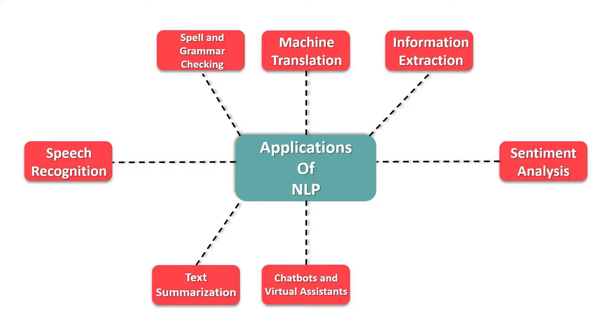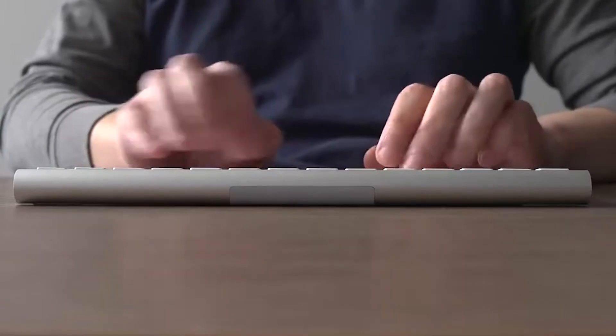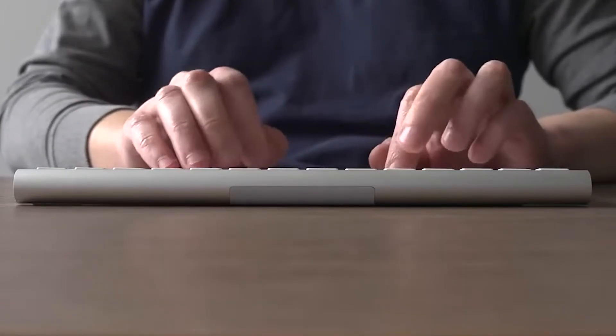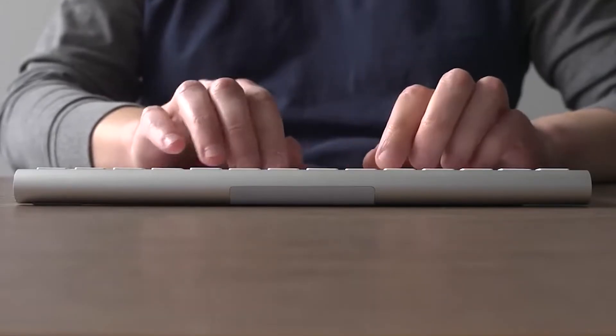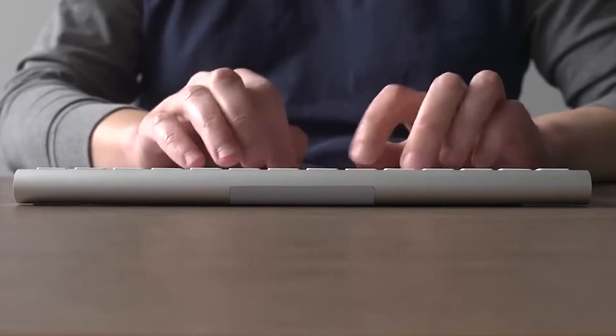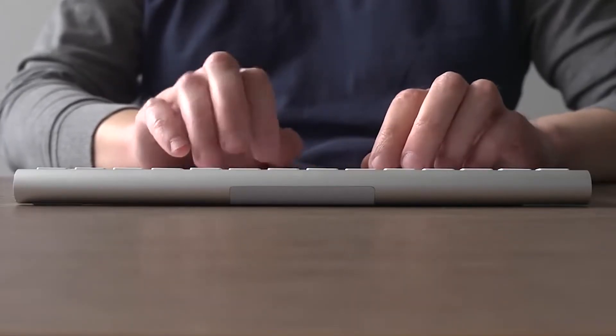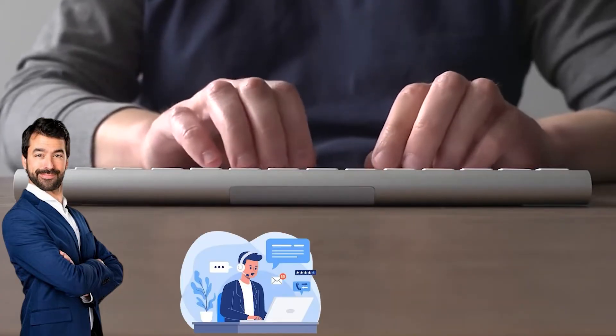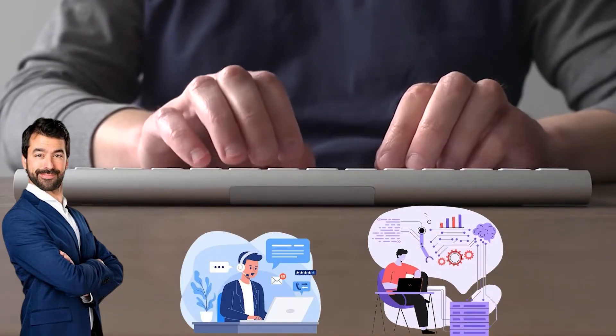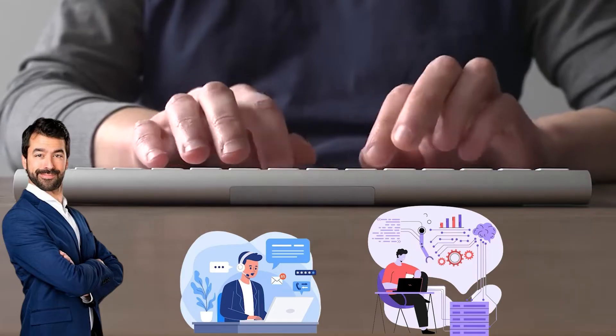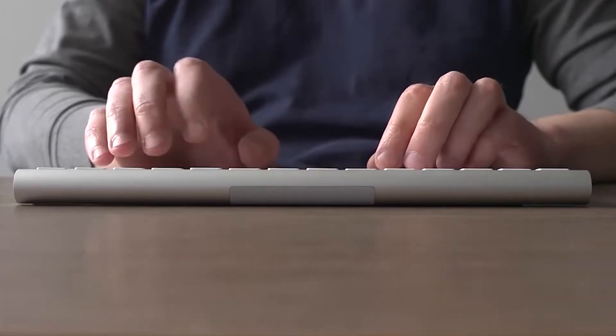Spell and grammar checking. There are a lot of applications available today which can perform a real-time check as you're typing your text, to make it more professional or formal. You can take assistance from various algorithms that understand the nuances of a language very well, and these can help you shape your communication to a more professional level.